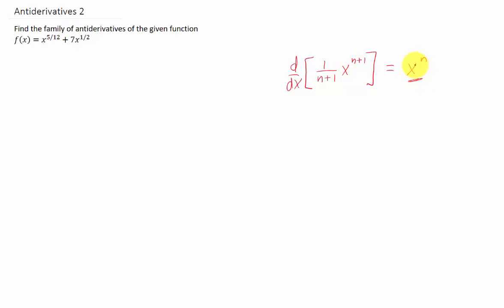So if we want to find the antiderivative of x to any power, what we have to do is add 1 to that power, and then divide by that new power. Let's see what I mean over here.